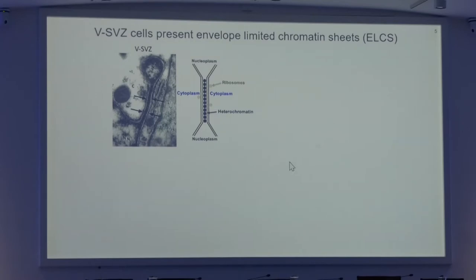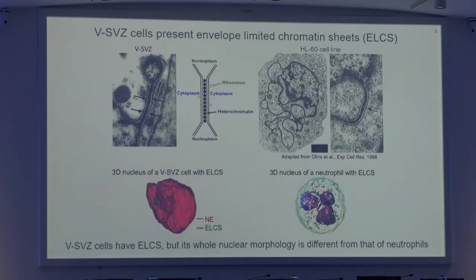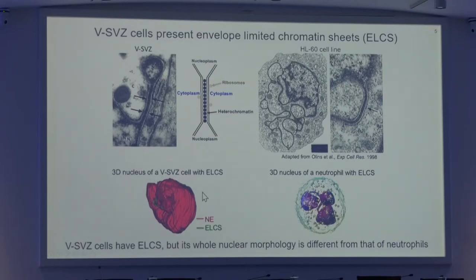When we studied these structures in the electron microscope in more detail, we found that they were always formed by a 30 nanometer chromatin sheet bounded on the two sides by the inner and outer nuclear membrane, forming a sandwich-like structure. These structures had already been described in neutrophils and also in cancer cells, and they were named envelope-limited chromatin sheets, or ELCs. Nevertheless, the overall morphology of the nuclei of cells in the ventricular subventricular zone presenting these structures is completely different from that of neutrophils, as you can see in this three-dimensional reconstruction.